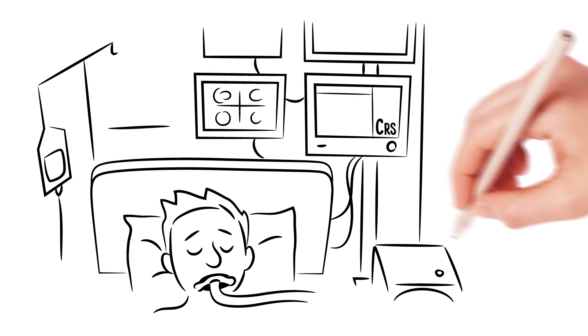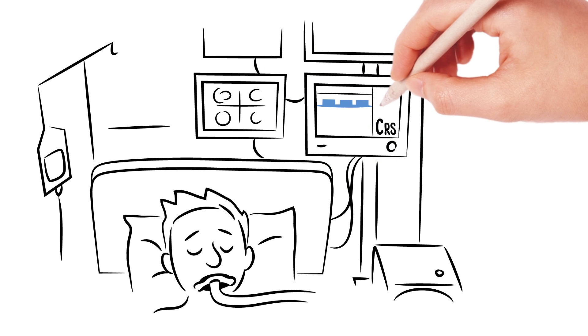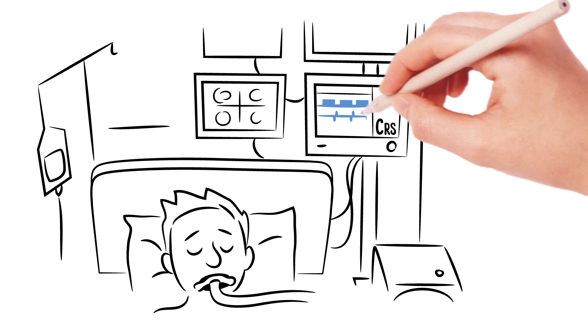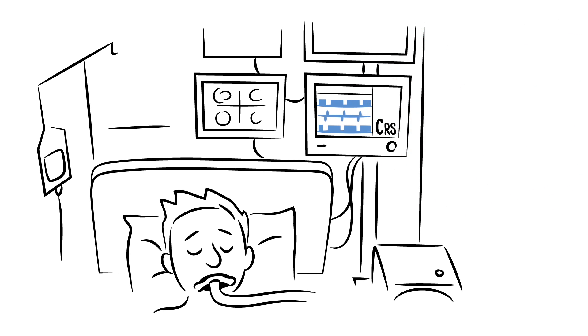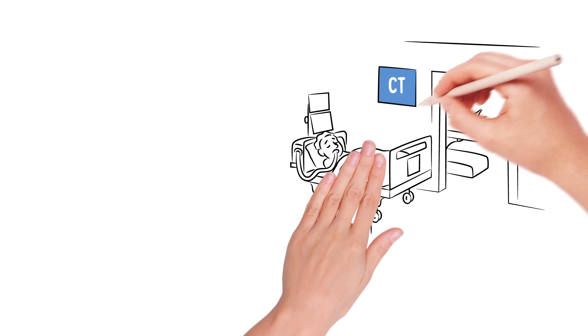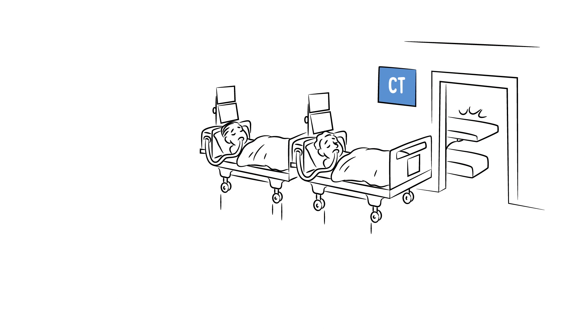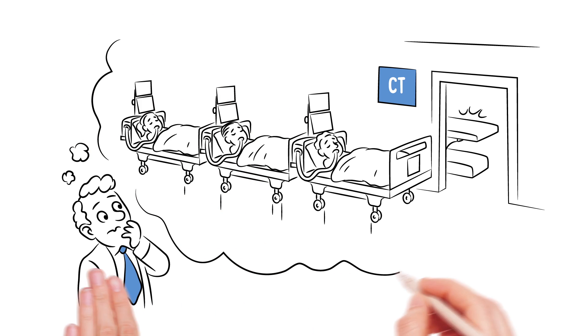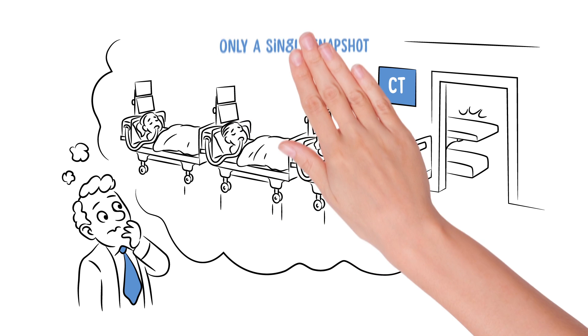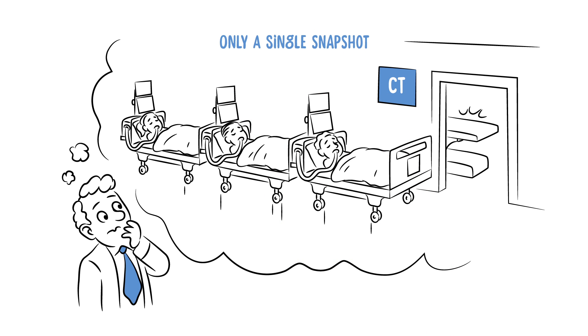Today there are many different ways to monitor the respiratory system. For instance, monitoring parameters of the ventilator, CT scans, blood gas analysis or x-rays. But all these modalities have their limitations. Very often they only represent a global average. Other modalities provide detailed regional information but cannot be monitored continuously and only represent a single snapshot in time.